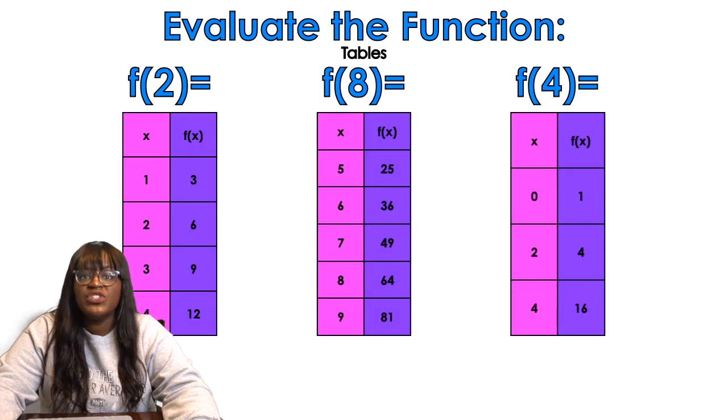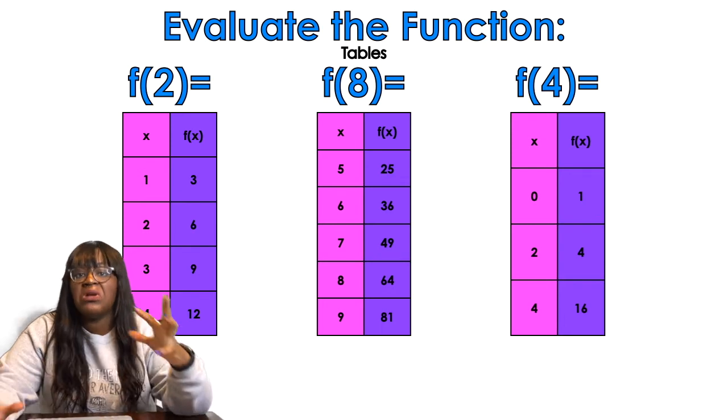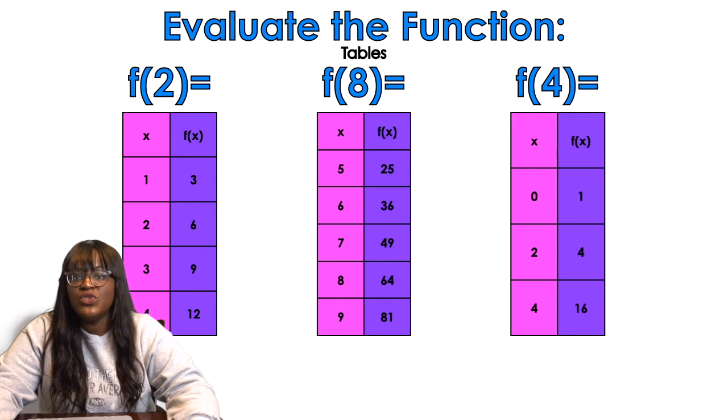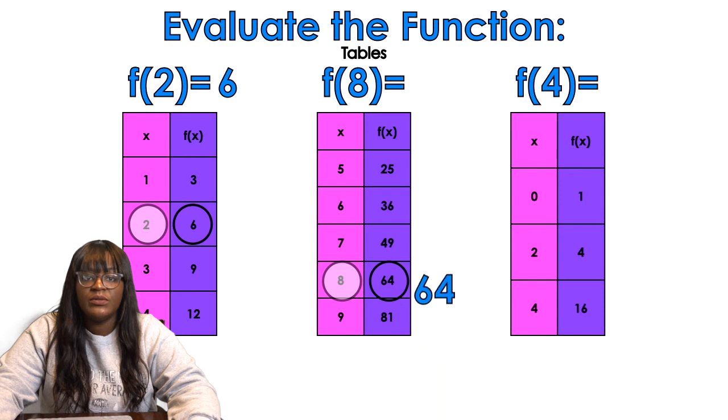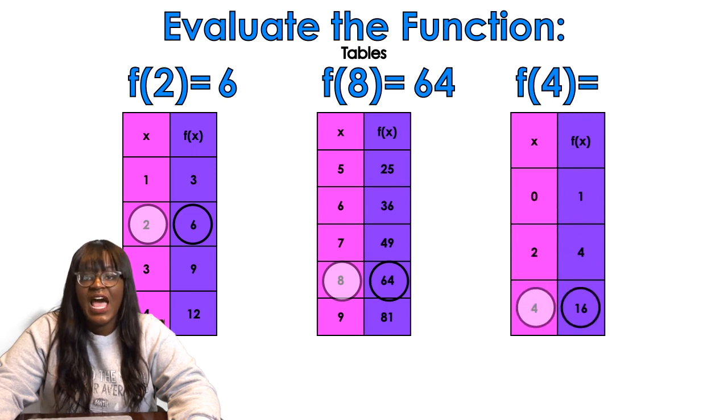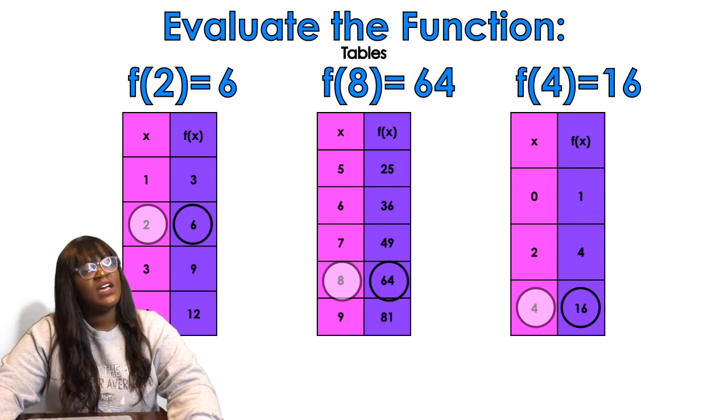All right, so now let's evaluate the function using tables, just so that we're well-rounded, so that nobody can say they don't understand the concept. When I plug in 2, that means I'm going to look for 2 on the table. What number comes with it? A 6. Guess what the answer is? 6. f(8), same thing. You should be able to figure this out now without even my help. 8 goes with what? 64. Boom. And last but not least, 4 goes with 16. Ta-da! You did it! That is how you evaluate functions in a nutshell.